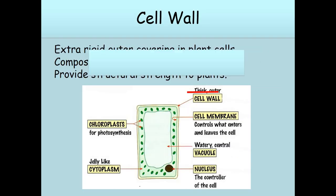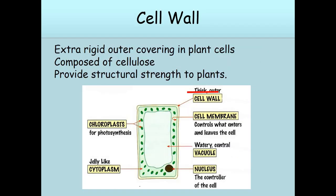Cell wall. It is the extra-rigid outer covering in plant cells, composed of cellulose. It provides structural strength to plants.